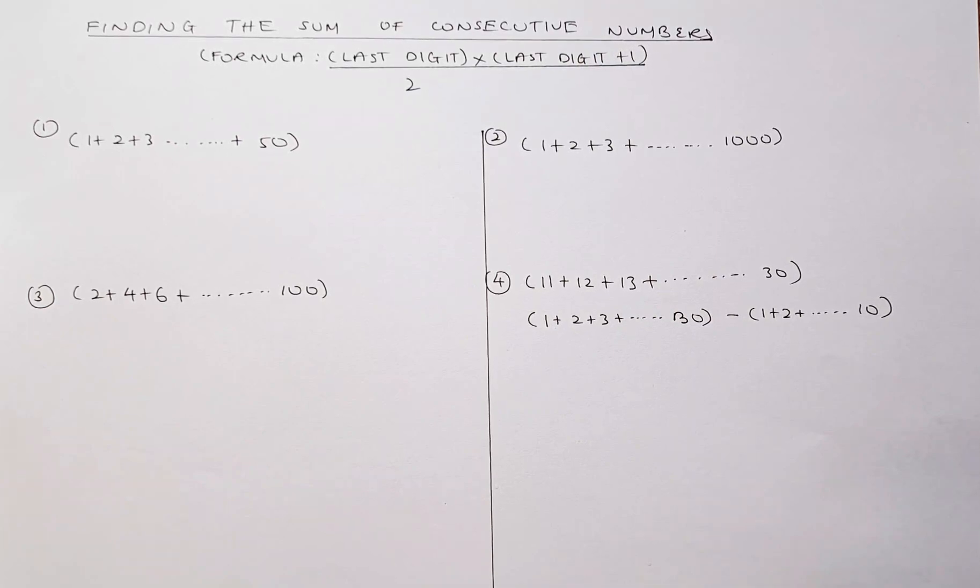Good morning! In this video, we are going to learn how to find the sum of consecutive numbers. The formula to calculate consecutive numbers only applies when the number starts with 1. The formula is last digit multiplied by the last digit plus 1 divided by 2.